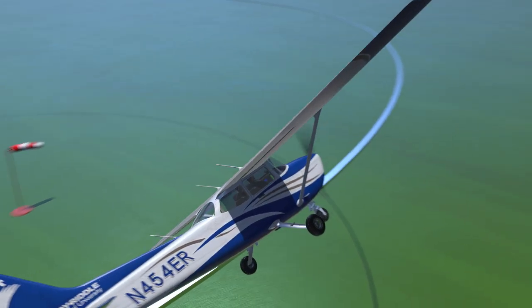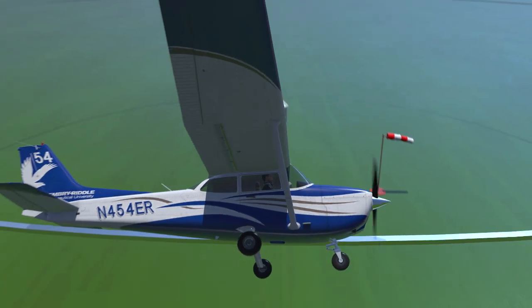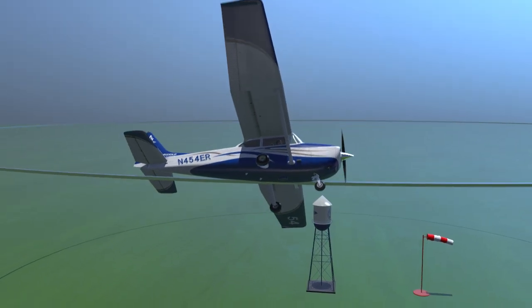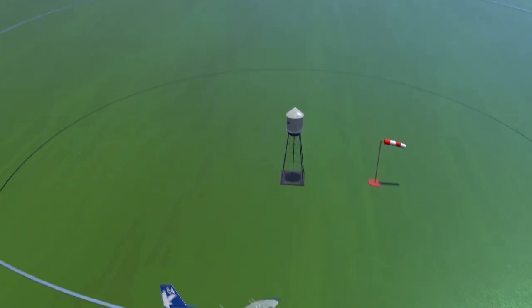Roll rapidly enough so the bank has reached abeam the point. Remember that the downwind is where the steepest bank occurs, so your initial bank should also be your steepest bank.